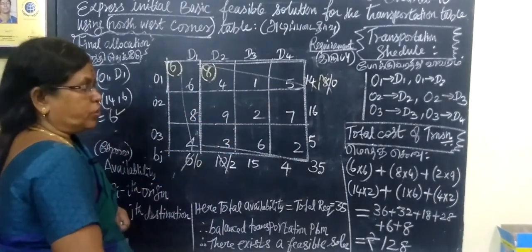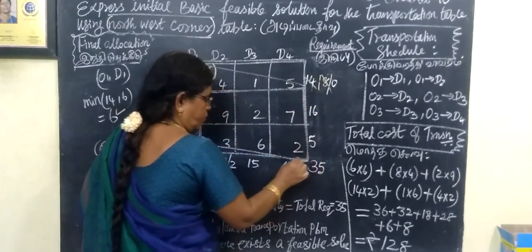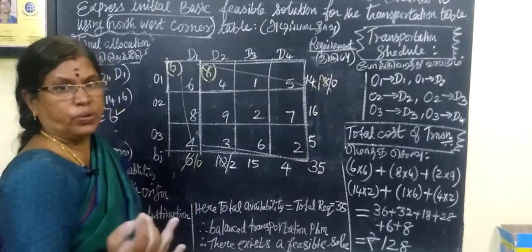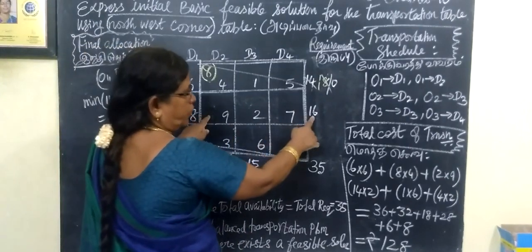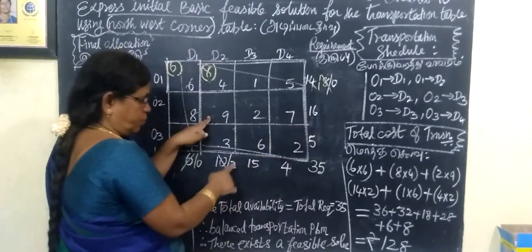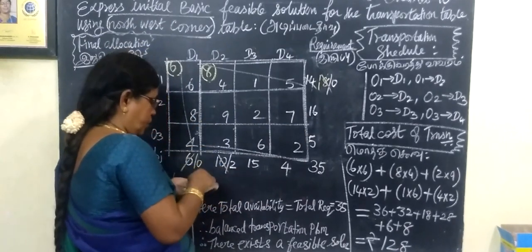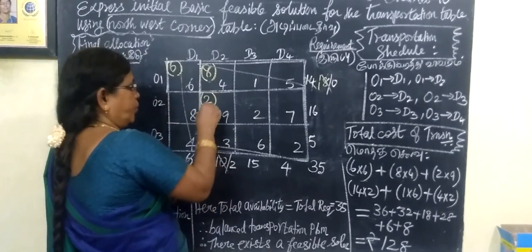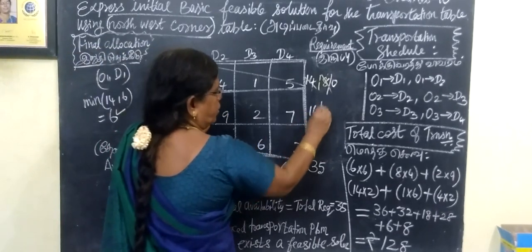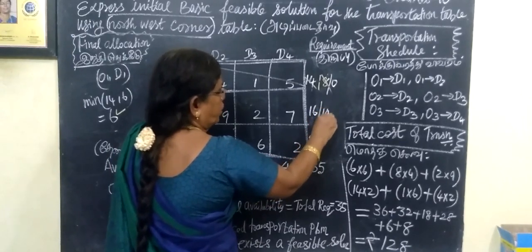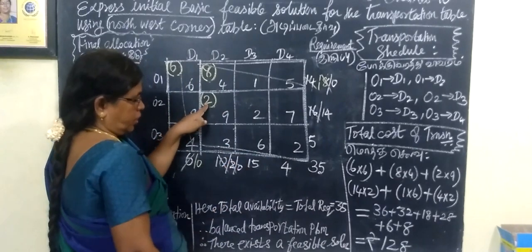Now the third allocation. This is the Northwest corner. The corresponding row value is 16 and the column value is 2. The minimum is 2. Take and write 2 immediately at the top corner. Subtract 2 from 16, so the balance is 14. Subtract 2 from 2, the remainder is 0. Strike out this cell.